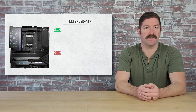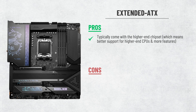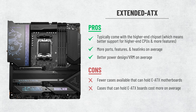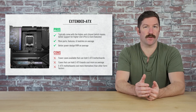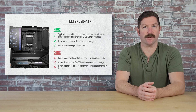Extended ATX boards are best suited for extreme systems. They pretty much always come with the high-end chipset on a given socket, which means more features and better support for higher-end CPUs. Their larger size allows them to offer more ports, more heatsinks, and a more robust power design. The downsides are obvious though: with a larger footprint, fewer cases are available, and those cases typically cost more. Extended ATX motherboards also cost more themselves, so the extended ATX form factor comes with a double premium when you consider the cost of the board itself and the more expensive case options required.